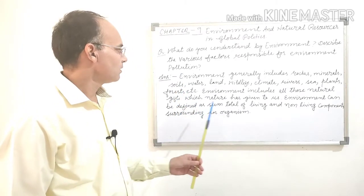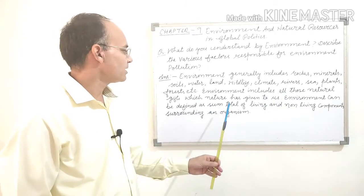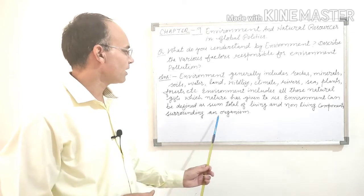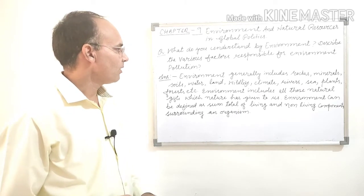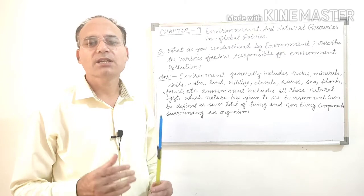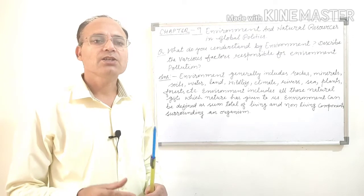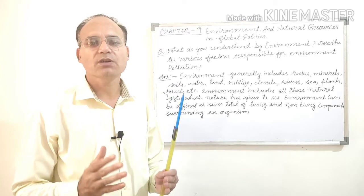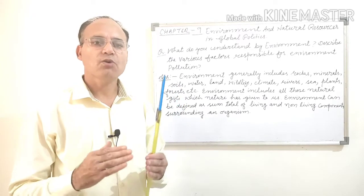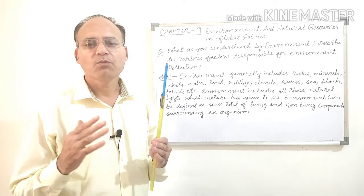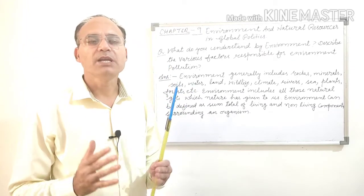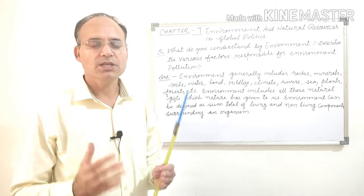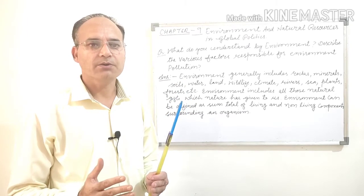All these environment can be defined as sum total of living and non-living components surrounding an organism. Environment ko hum is tarah se define kar sakte hai ki isme hai jo jitne bhi living and non-living things hai, natural jo aap dekhte hai, jo aapke surrounding mein hai, wo saare organism milkar environment banate hai. Mujhe lagta hai aap environment ka matlab samajh gaye honge.